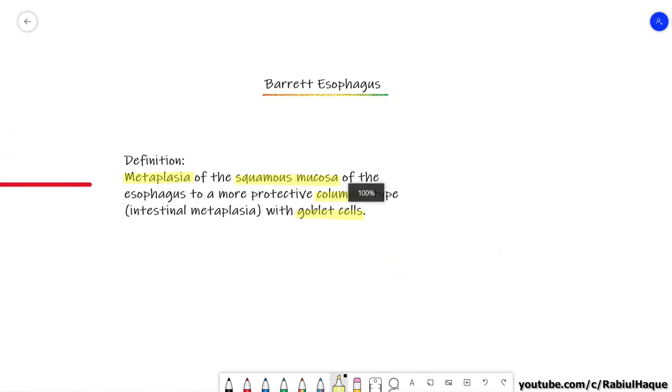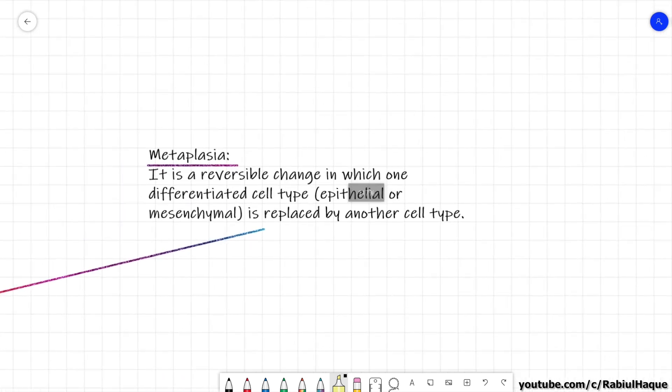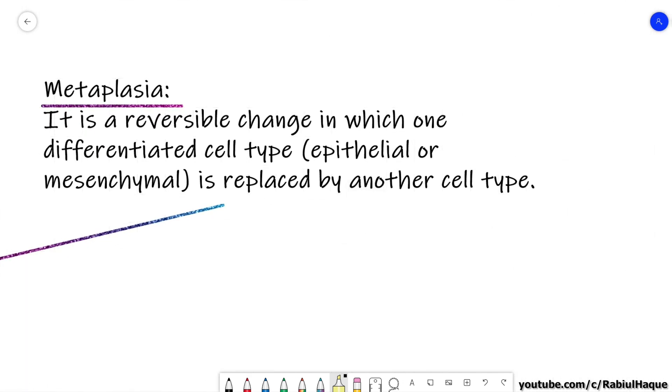Now let's explain this definition. The first thing that we have to remember is what do we mean by metaplasia. Recall from our general pathology lectures we had seen that metaplasia is a reversible change in which one differentiated cell type, either epithelial or mesenchymal, is replaced by another cell type. Now mark this word 'replaced,' because often my students make a mistake. They think that metaplasia is a reversible change where one cell is getting changed into another cell.